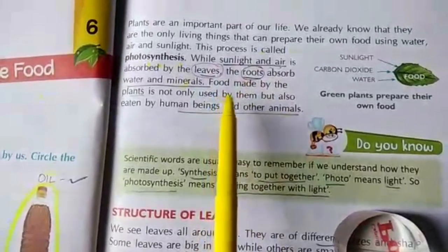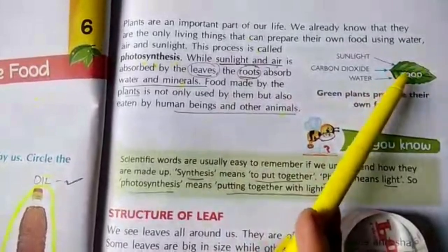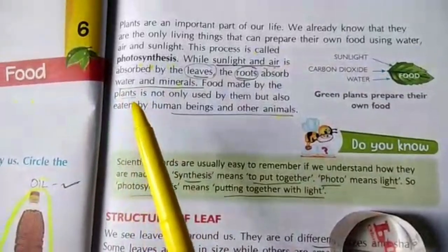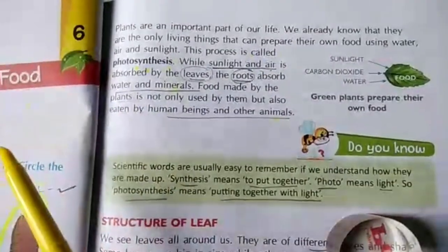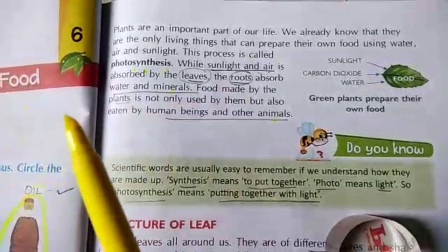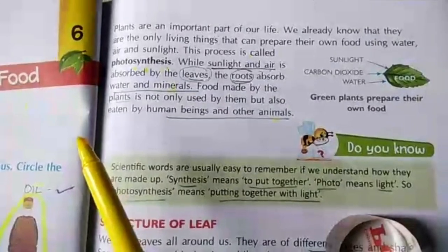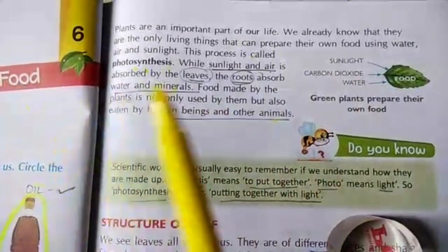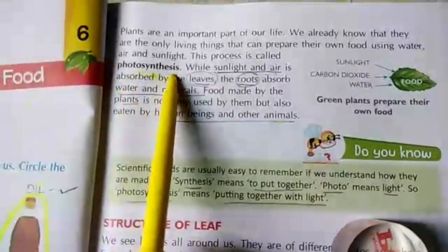Chlorophyll is a substance in all green plants, especially in the leaf. Photosynthesis starts when chlorophyll absorbs energy from sunlight. Green plants use this energy to change water and carbon dioxide into oxygen and nutrients called sugar. This is the process of photosynthesis. Plants use some of the sugar and store the rest, while the oxygen released into the air is used by humans.